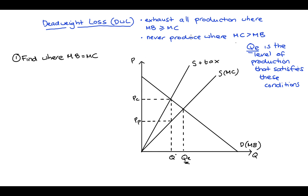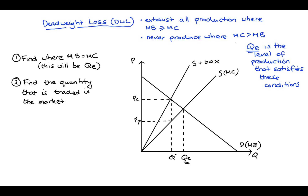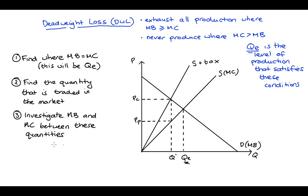QE is where we should produce to exhaust all trade where marginal benefit is greater than or equal to marginal cost. The market only produces Q*. Looking at the quantities between Q* and QE, we can see that marginal benefit is higher than marginal cost for all of those units, but the market has failed to produce them because of the tax. This is a bad situation — it leads to deadweight loss. So we shade in that space between the marginal benefit and marginal cost curves, and that is our deadweight loss.